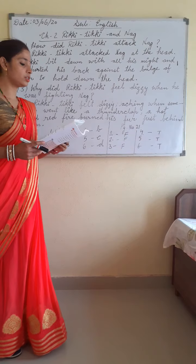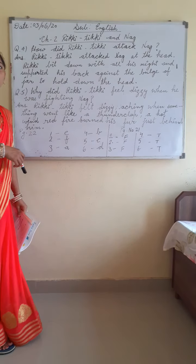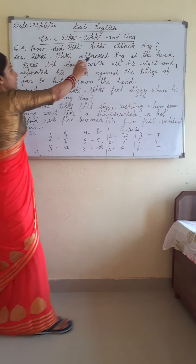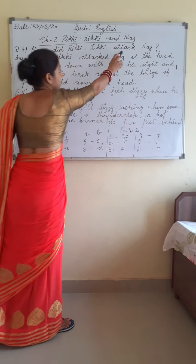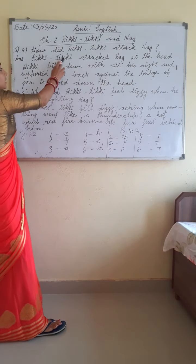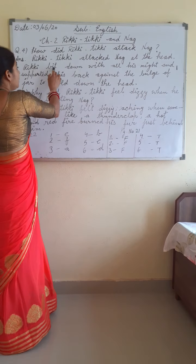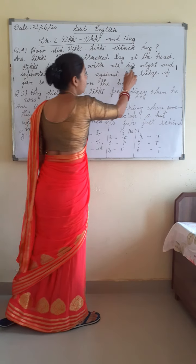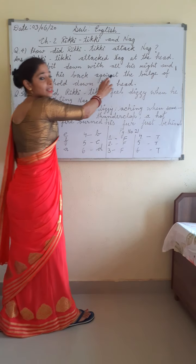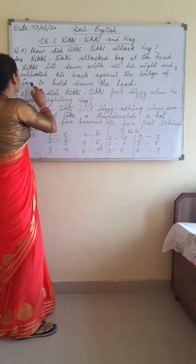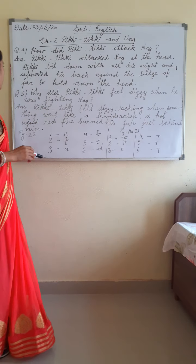Question number 4 is: How did Rikki Tikki attack Nag? I have already mentioned this on the blackboard. Note that the first form of 'attack' will be 'attacking.' The answer is: Rikki Tikki attacked Nag and bit down with all his might and supported his back against the buzz of the jar to hold down the head. You will write that in your notebook.